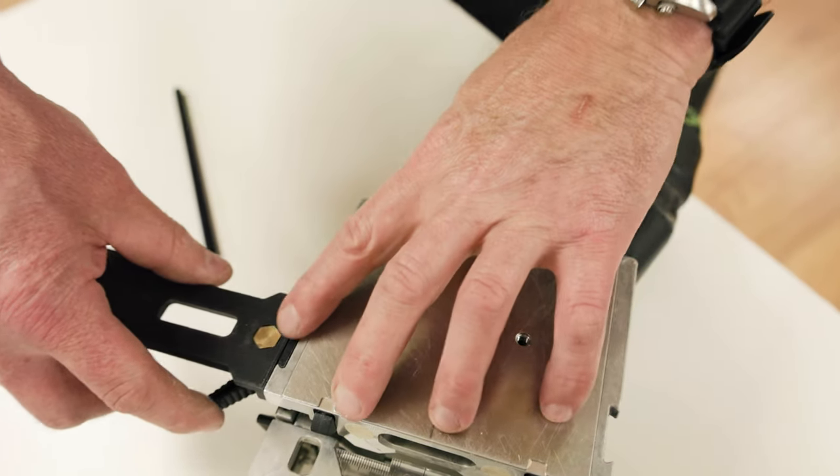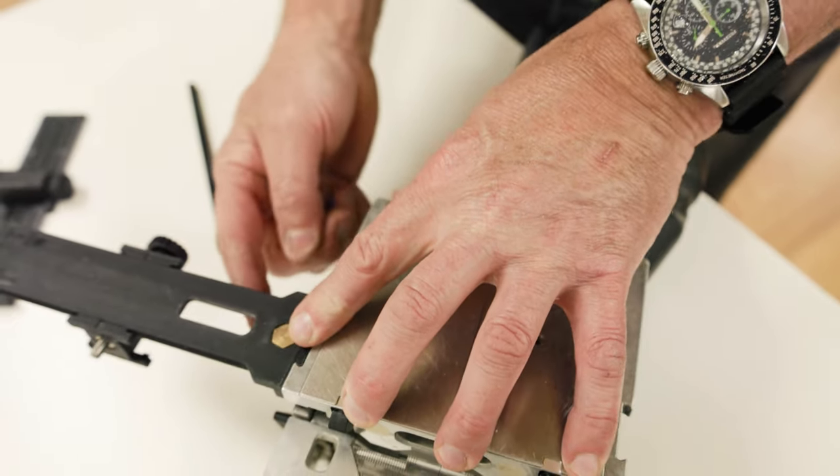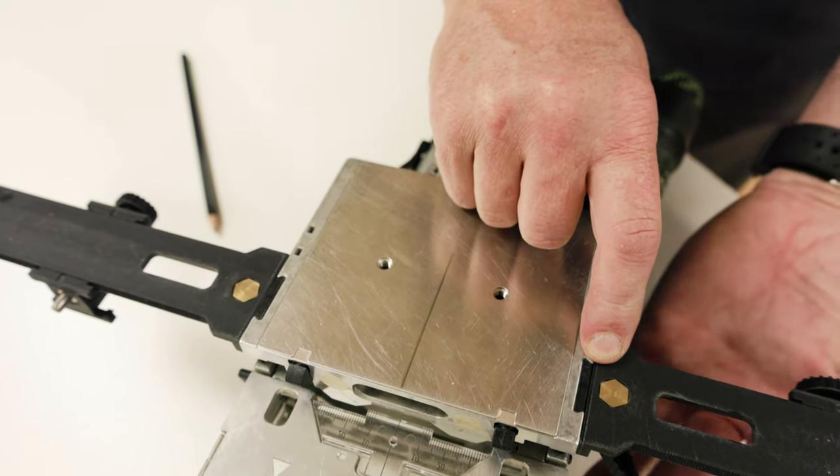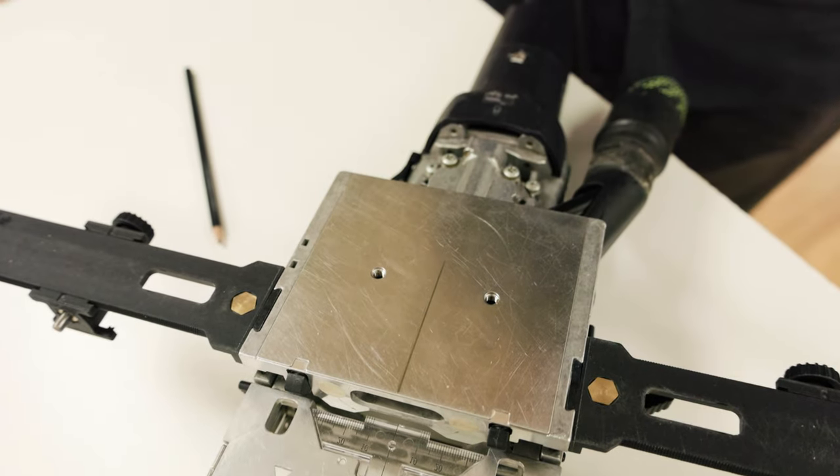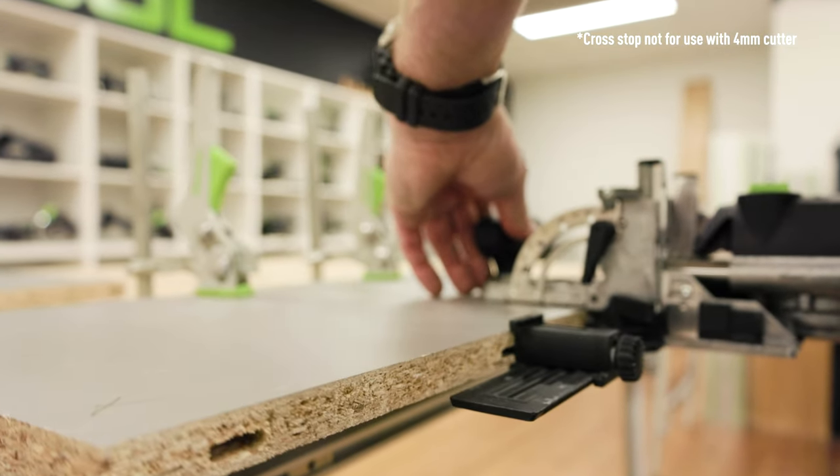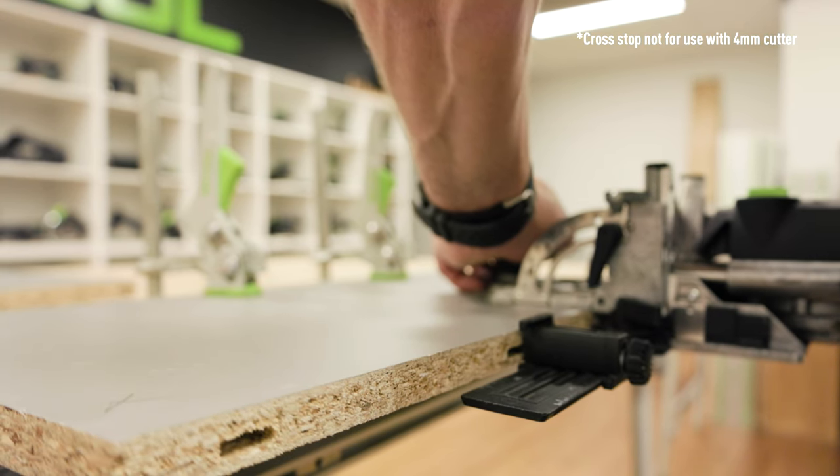Insert the cross stop into the slot. Turn the locking lever towards the rear to lock the cross stop to the base of the domino. The cross stop pin can now be used to register a mortise from the edge of the previous mortise.